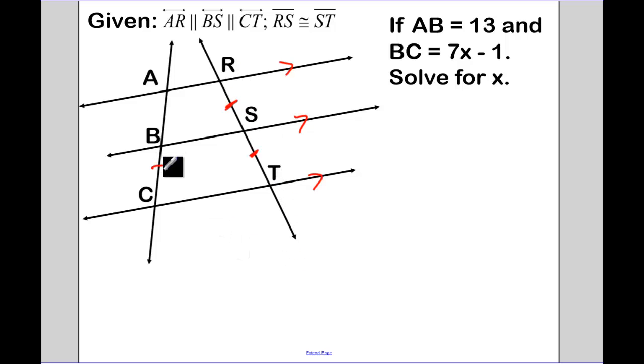Therefore, I'm going to cut off congruent pieces on the other transversal. AB is the length of 13. BC is the length of 7X minus 1. So I know that 7X minus 1 is going to equal 13.